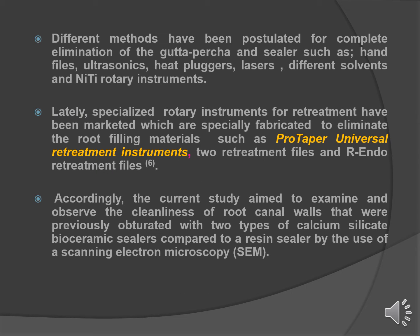Different methods have been postulated for complete elimination of the gutta percha and sealer, such as hand files, ultrasonics, heat pluggers, lasers, different solvents, and rotary instruments. Lately, specialized rotary instruments for retreatment have been marketed, specially fabricated to eliminate root-filling materials such as ProTaper Universal retreatment instruments, two retreatment files, and R&O retreatment files. Accordingly, the current study aims to examine and observe the cleanliness of root canal walls previously obturated with two types of calcium silicate bioceramic sealers, compared to a resin sealer, by the use of scanning electron microscopy.